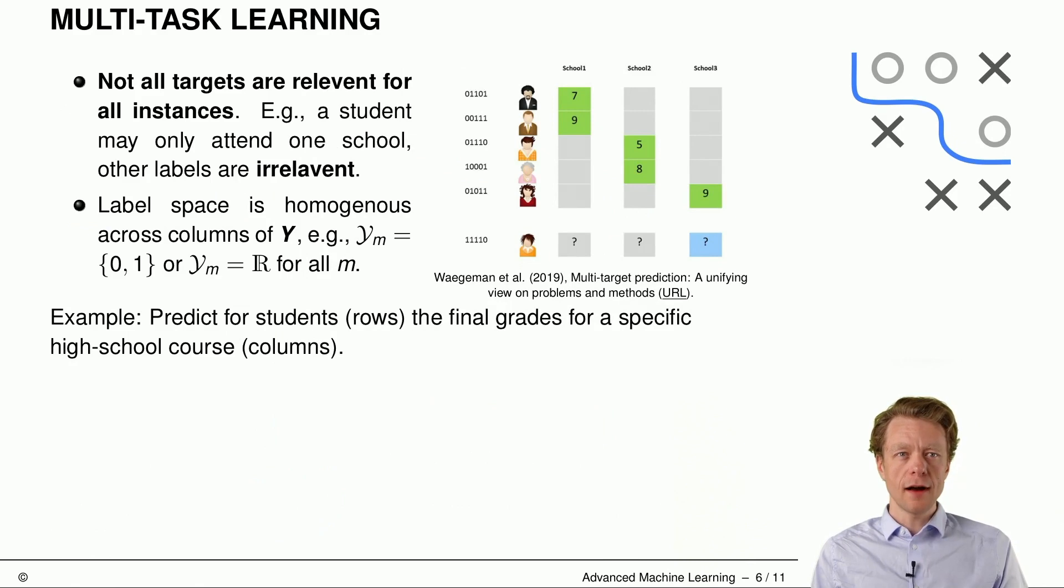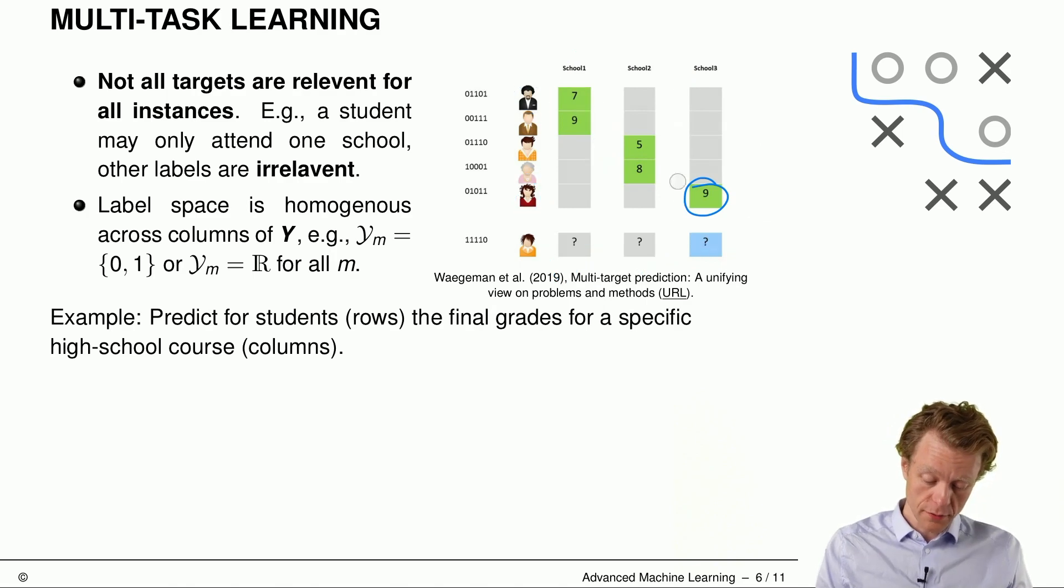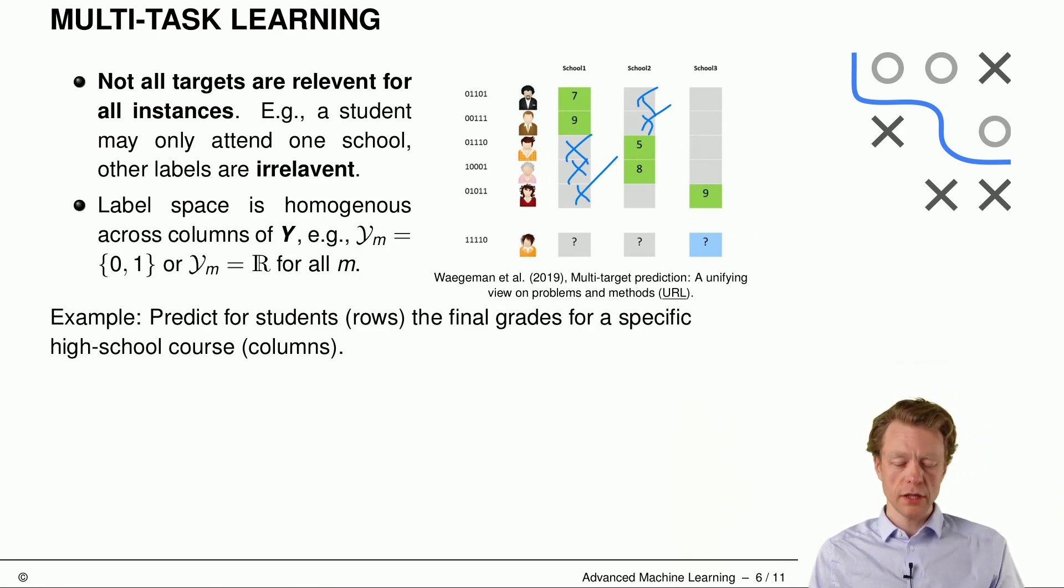And then we have multi-task learning. So it can happen that not all targets are relevant for all instances. So here in this example, we have students and they may only attend one school. So for example, this student attends school 1, this other student attends school 3, and we have some final grades for a specific high school course. And here in that case, the label space is homogeneous across columns. So because we are measuring the same thing, just for different schools. But we have a bunch of missing values here. As you can see, missing, missing, missing, missing, and so on. But that's a lot too.